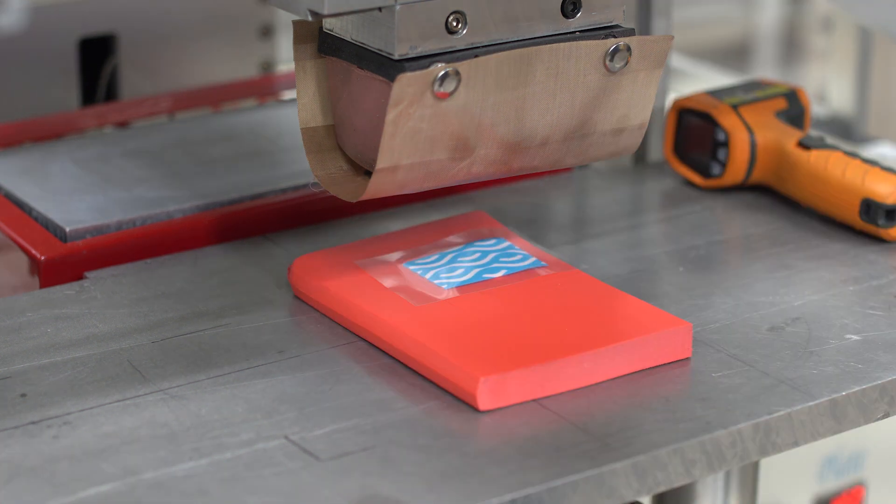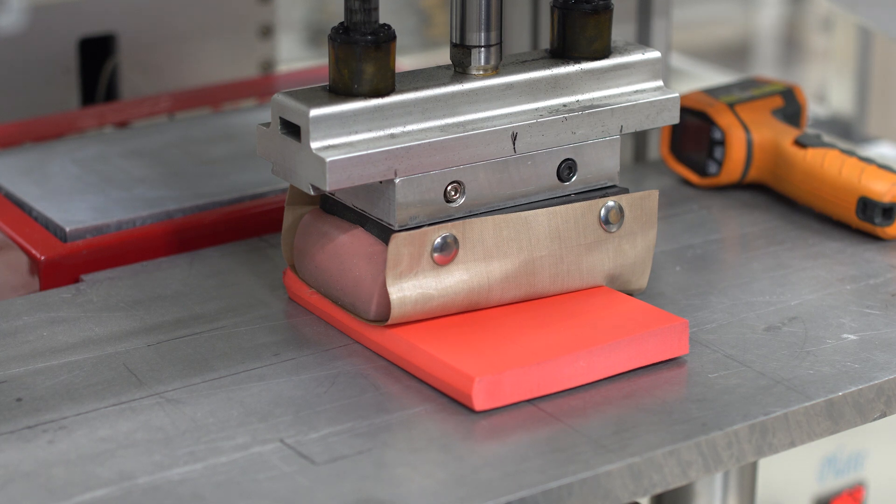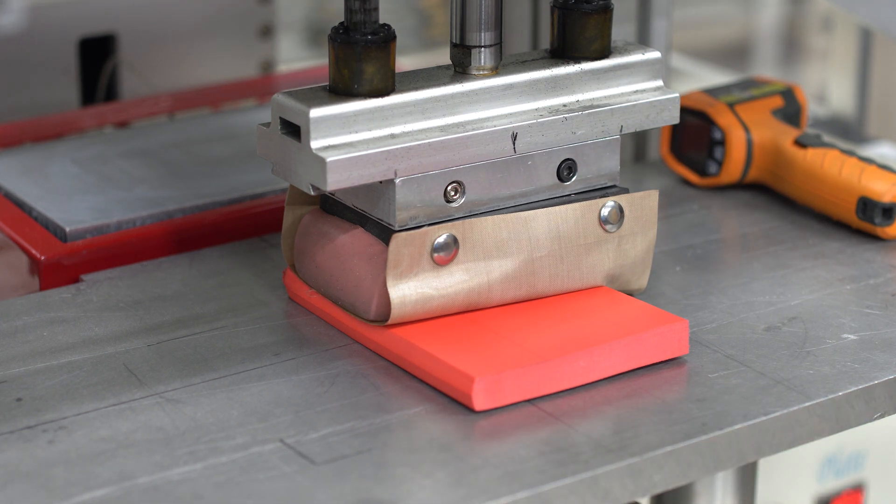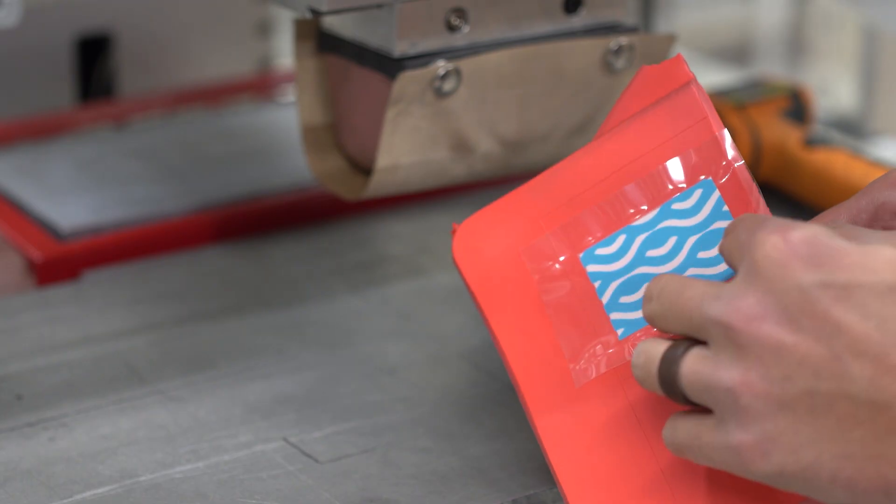We use an EVA compatible label and use our stamping process to fuse the label into the foam. This is a fast, easy, and repeatable way to label EVA foam for life.